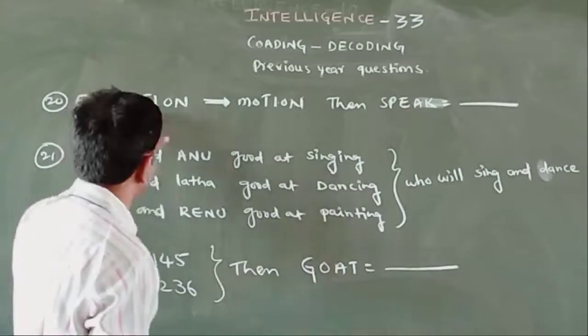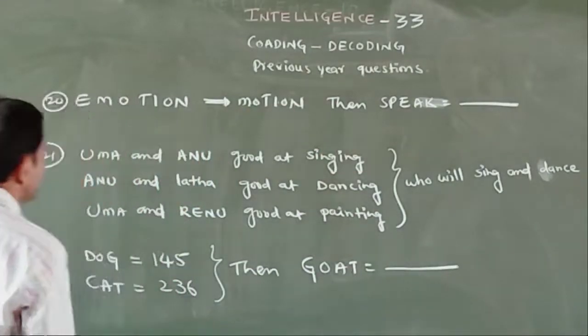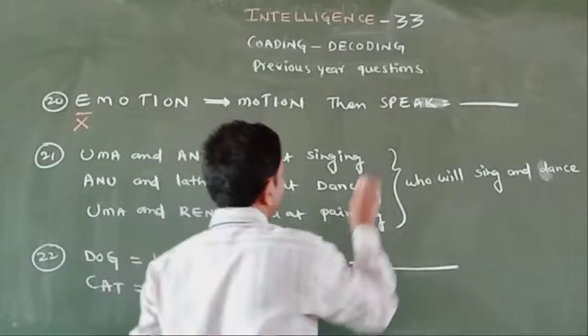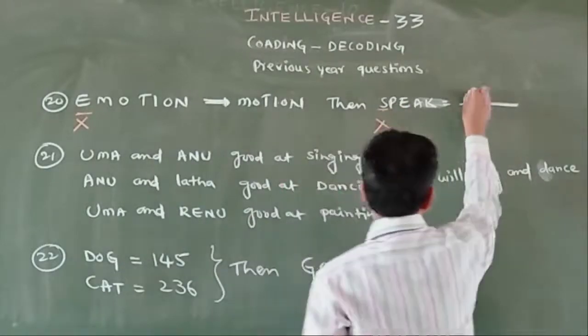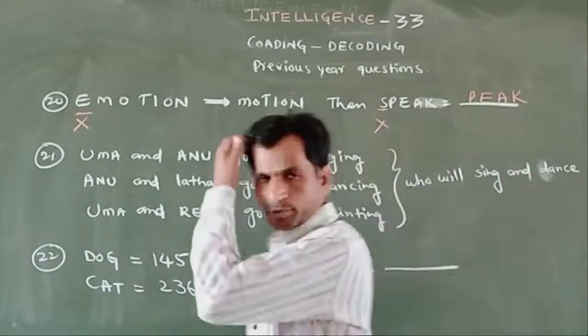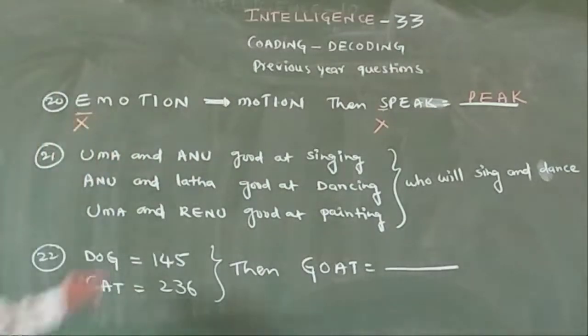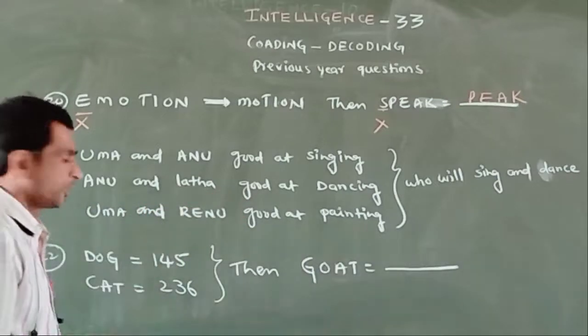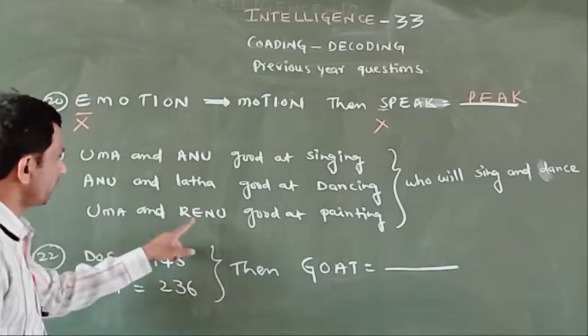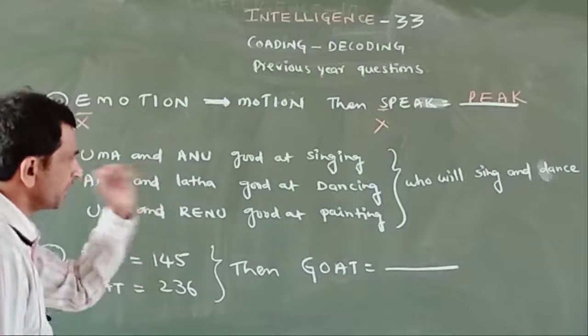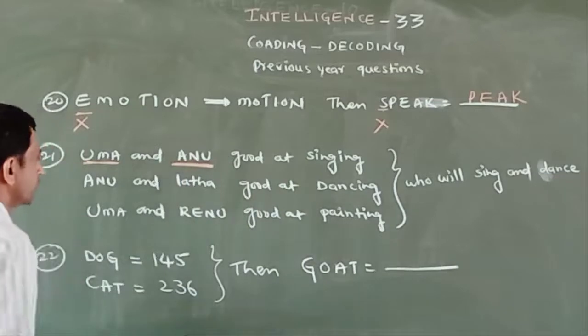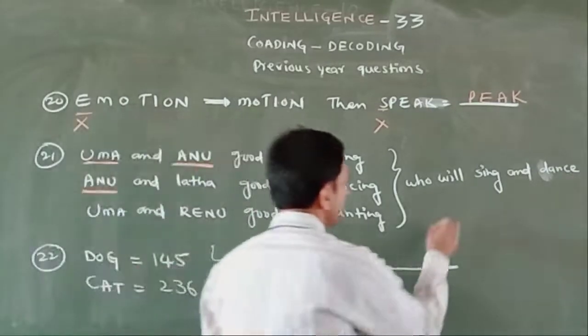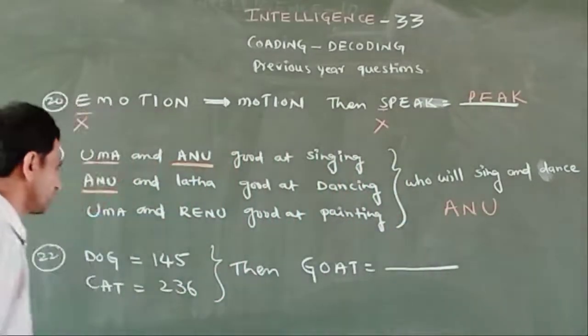EMOTION is written as MOTION. The first letter E is removed. Determine SPEAK: STEAK. S is removed, PEAK is the answer. UMA and ANU good at singing, ANU and LATHA good at dancing, UMA and RENO good at painting. Who will sing and dance? Singing: UMA and ANU. Dancing: ANU and LATHA. Common in the end is ANU. Answer is ANU.